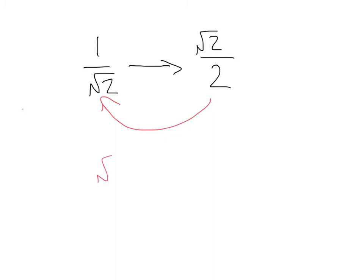Same goes for root 3 over 3. That can be converted to 1 over square root of 3. These unrationalized forms might be more useful in some of the stuff we're getting into.